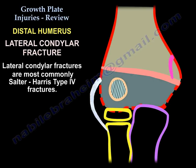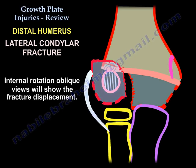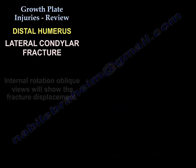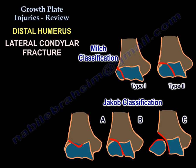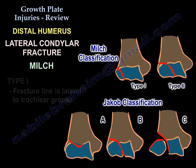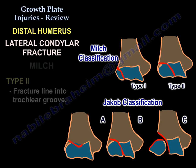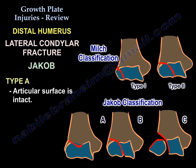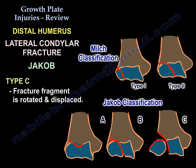Lateral condylar fracture is considered a type 4 Salter-Harris fracture — an important fracture. Internal rotation oblique view will show fracture displacement; the fracture can be missed. Two classification systems are used: the Milch classification and the Jacob classification. Milch type 1: fracture line is lateral to the trochlear groove. Type 2: fracture line goes into the trochlear groove. Jacob has three types — type 1: articular surface intact; type 2: fracture into the joint but no rotation; type 3: fracture fragment rotated and displaced.